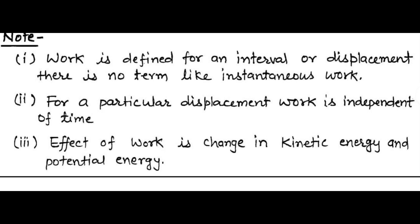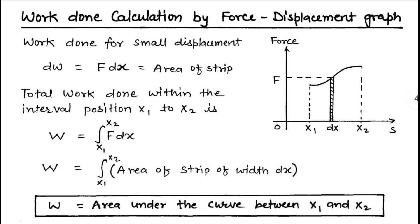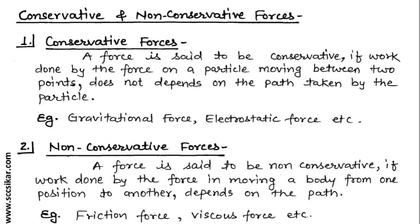The effect of work is a change in the kinetic energy and potential energy of the object. For numerical problems, we can calculate work from a force-displacement graph. On such a graph where force is variable, if the graph varies from x₁ to x₂, we consider a small strip to calculate a small amount of work done: dW = F·dx. F·dx also represents the area of the strip of width dx. The total work done from x₁ to x₂ is the integral of F·dx, which equals the area under the curve between x₁ and x₂.